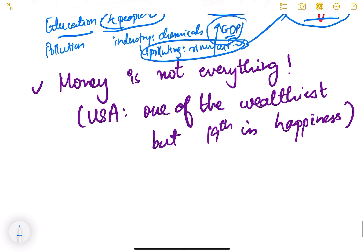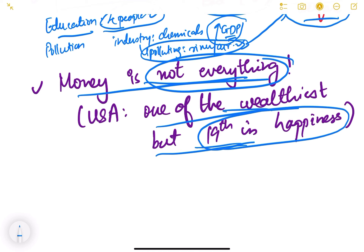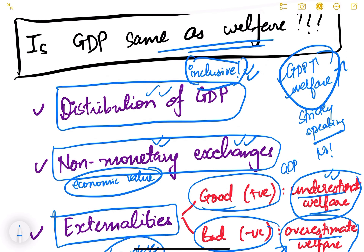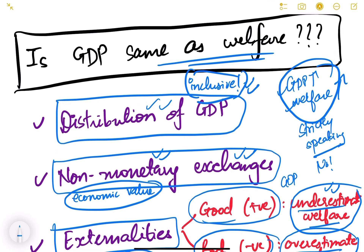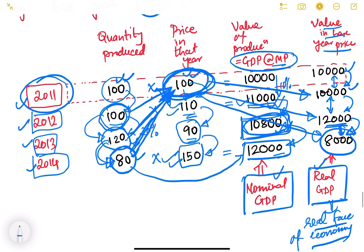Lastly, money is not everything. The USA is one of the wealthiest countries in the world but ranks 19th in happiness. A country may be poor but still be the happiest. Happiness does not really depend on how much you are earning or how much money you have. So GDP is definitely not the same as welfare because of these reasons. We have also studied how in real life GDP is calculated.